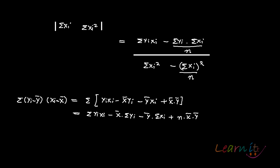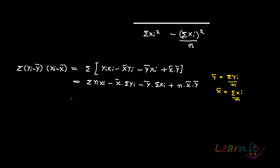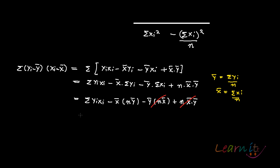Now, y bar equals summation of yi upon n, and x bar equals summation of xi upon n. So what you have is summation of yi·xi minus x bar into n·y bar minus y bar into n·x bar plus n·x bar·y bar. This becomes minus n·x bar·y bar and plus n·x bar·y bar, which cancel out, leaving summation of yi·xi minus n·x bar·y bar.